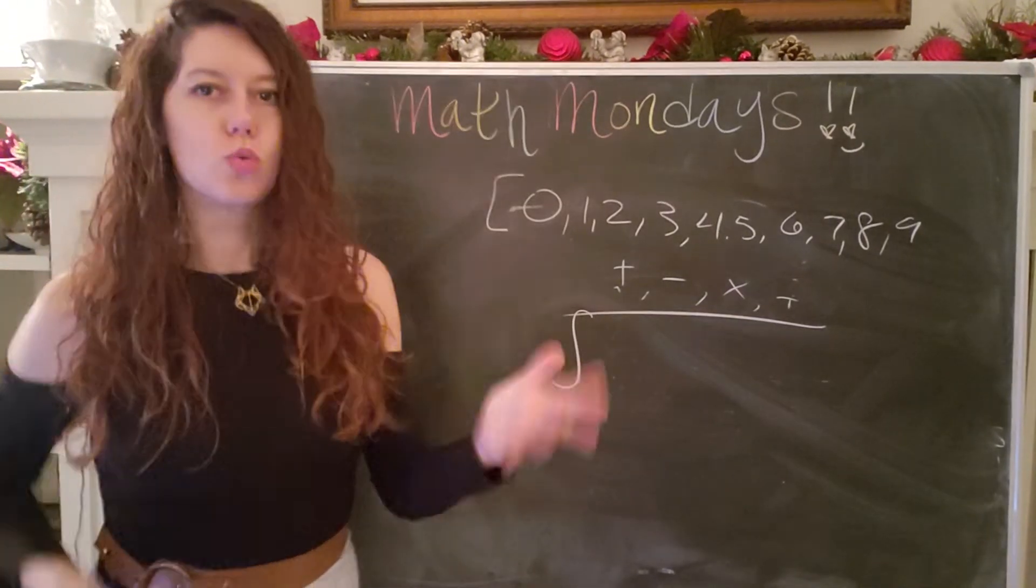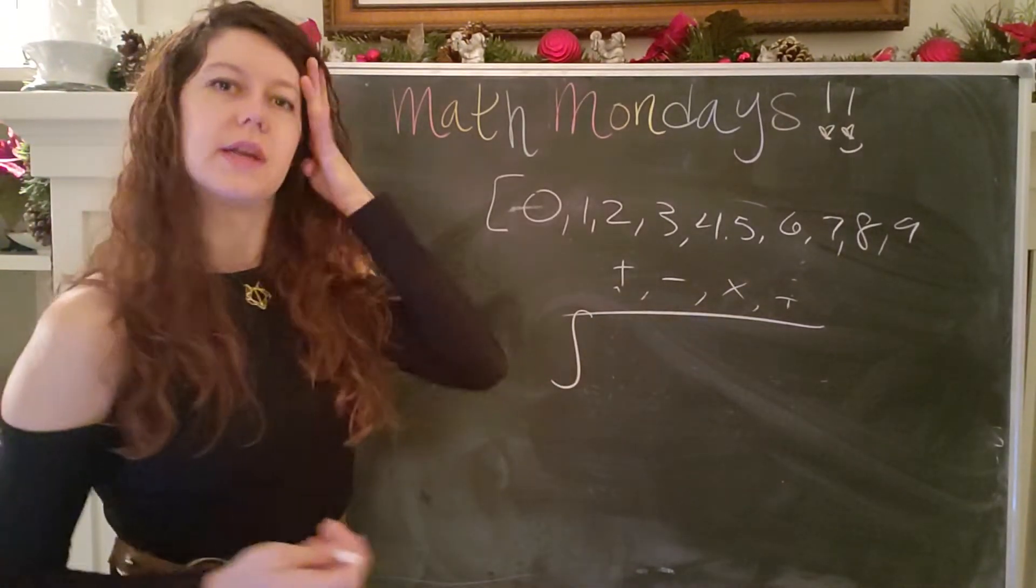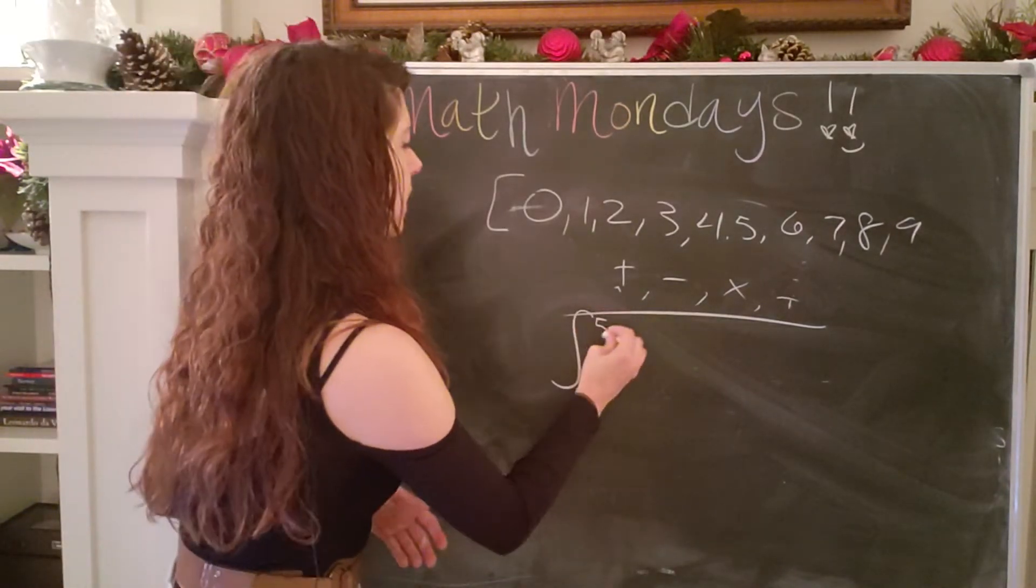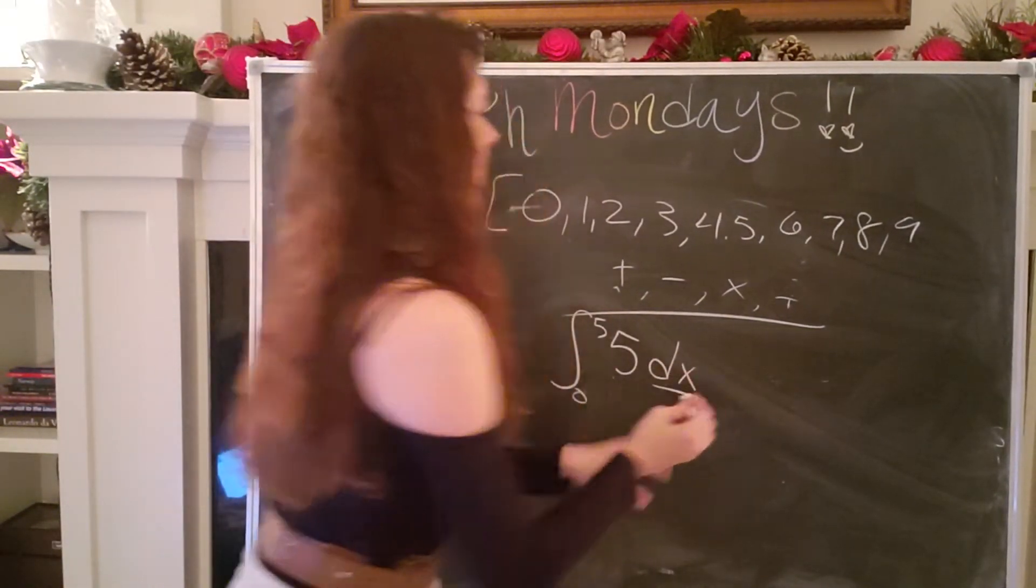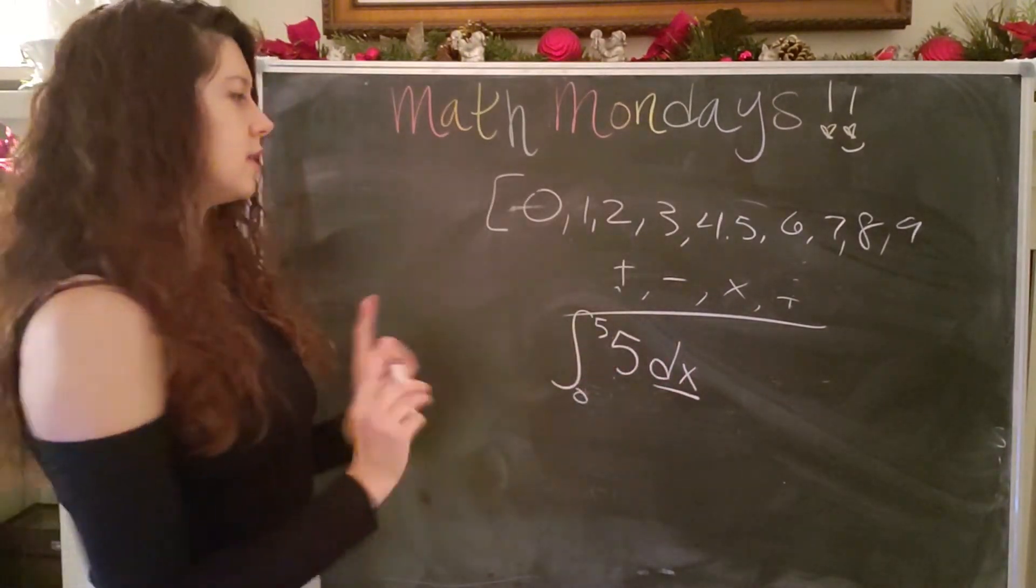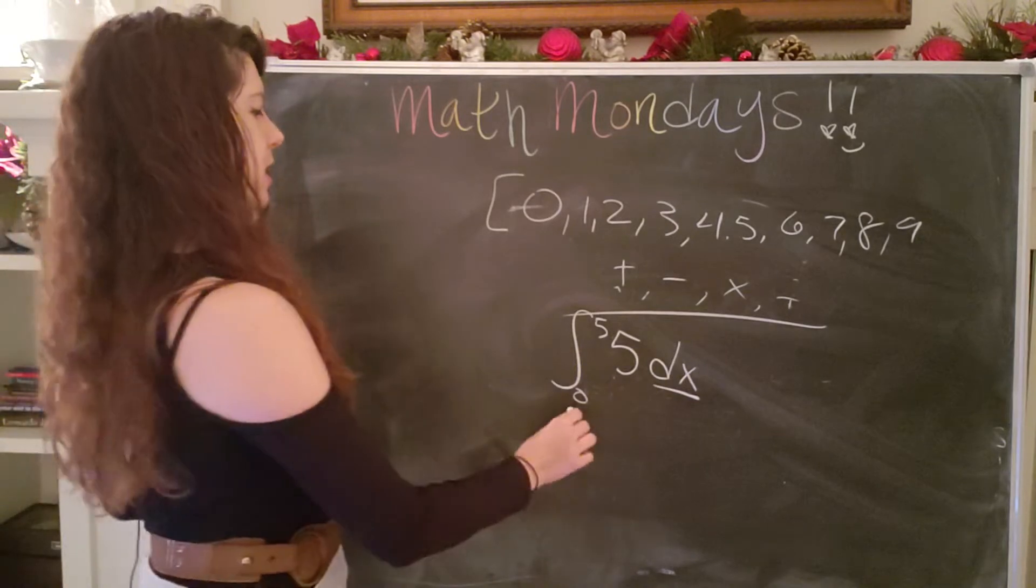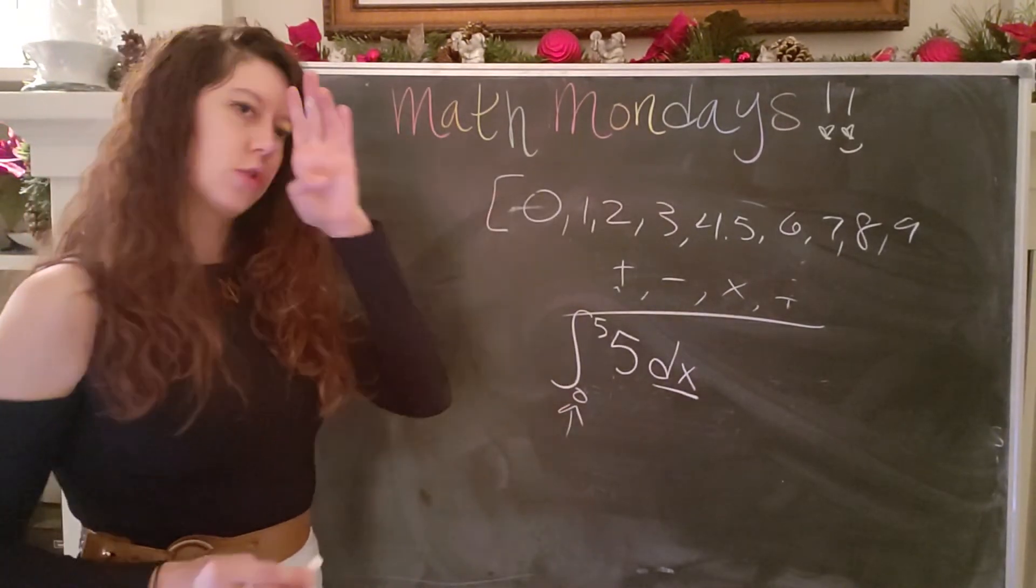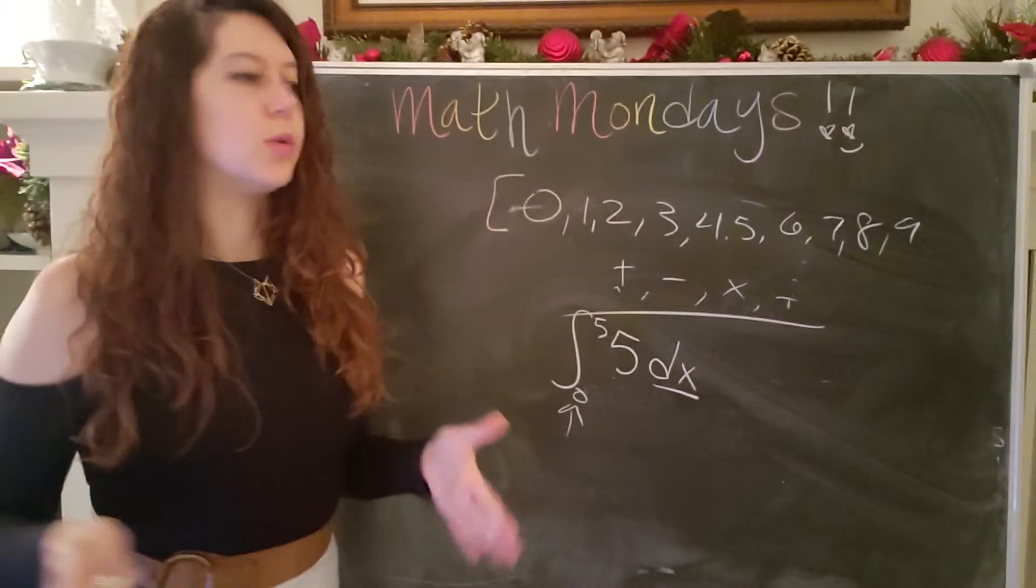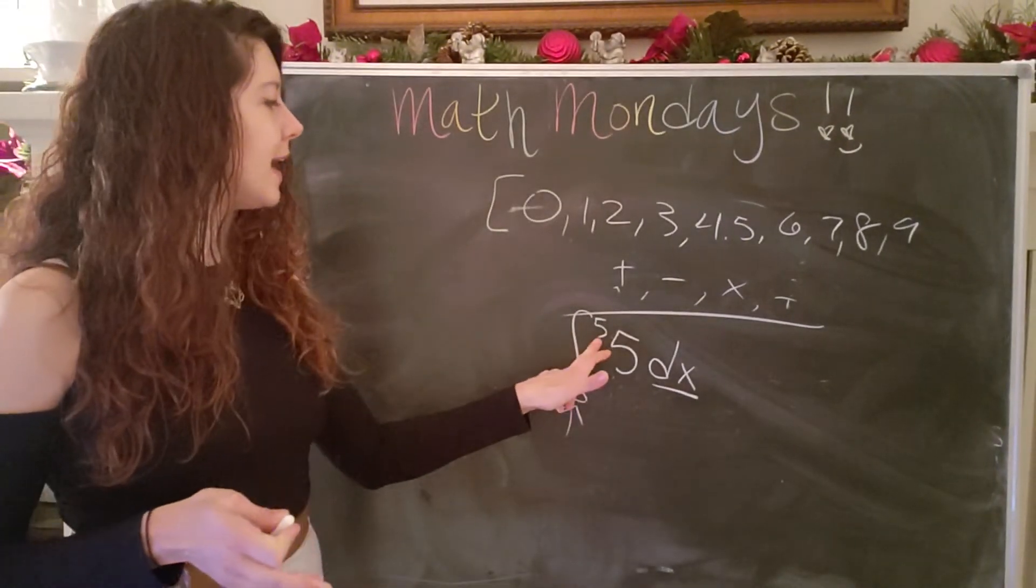So the integral is really just a summation or a sum that is continuous. So if I wanted to represent five times five using an integral, what I would do is I would say, okay, well, we're going from zero to five of five with respect to dx. So the integral, there are three main parts. The first is the integral sign. This is called a definite integral, meaning that there are bounds to it. There's a starting point zero and an ending point five.